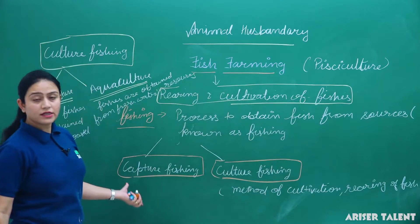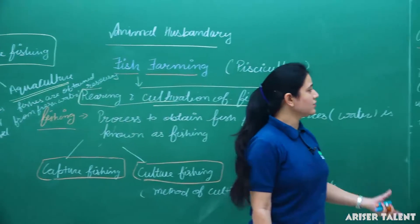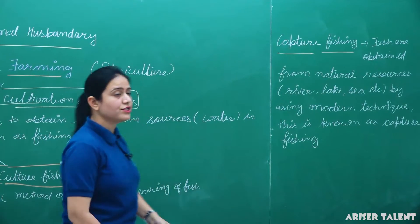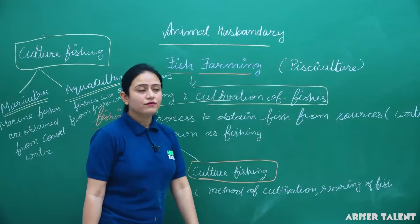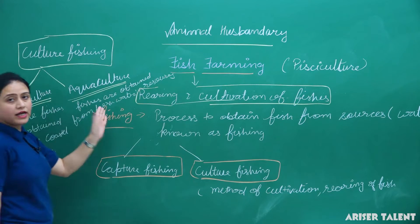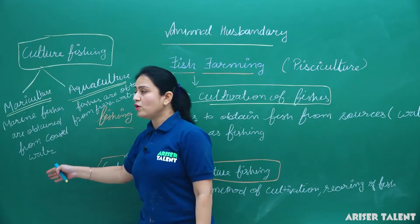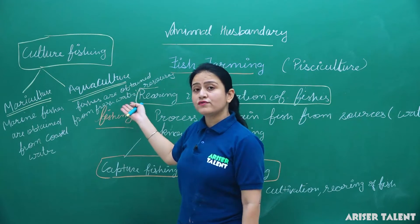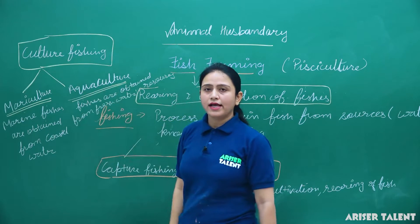Fish farming is done by two methods: capture fishing and culture fishing. In capture fishing, fishes are obtained from natural resources like rivers, lakes, and seas using modern techniques. Culture fishing is divided into mariculture — marine fishes from coastal water — and aquaculture — fishes from fresh water sources like ponds and rivers.